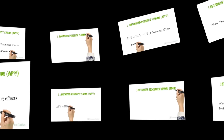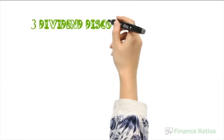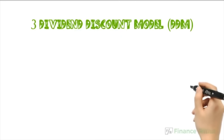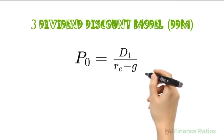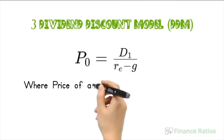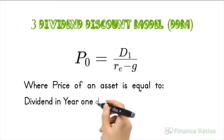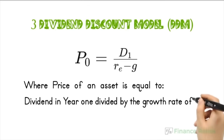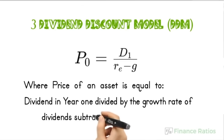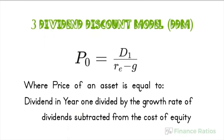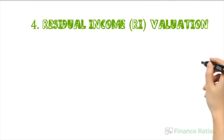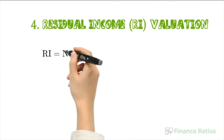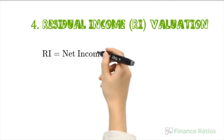Next is the dividend discount model, or DDM, where the price of an asset is equal to the dividend in year one divided by the cost of equity minus the growth rate of dividends.